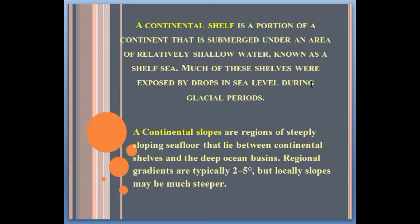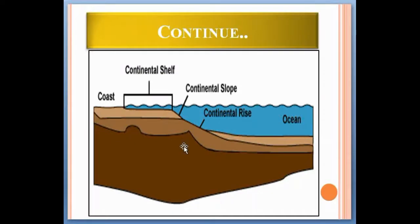During the ice age in the Pleistocene era, continental slopes are a region of steeply sloping seafloor that lies between the continental shelf and deep ocean basins. Regional gradients are typically two to five degrees, but locally slopes may be much steeper.